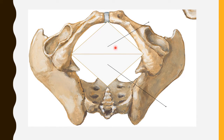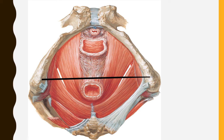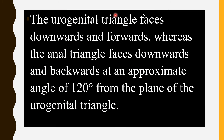In the female pelvis, the urogenital triangle contains the urethral orifice and vaginal orifice, while the anal orifice is in the anal triangle. In males, only the urethral orifice is present in the urogenital triangle, whereas in females both the urethral and vaginal orifices are present. The urogenital triangle faces downwards and forwards, whereas the anal triangle faces downwards and backwards at approximately 120 degrees from the plane of the urogenital triangle.